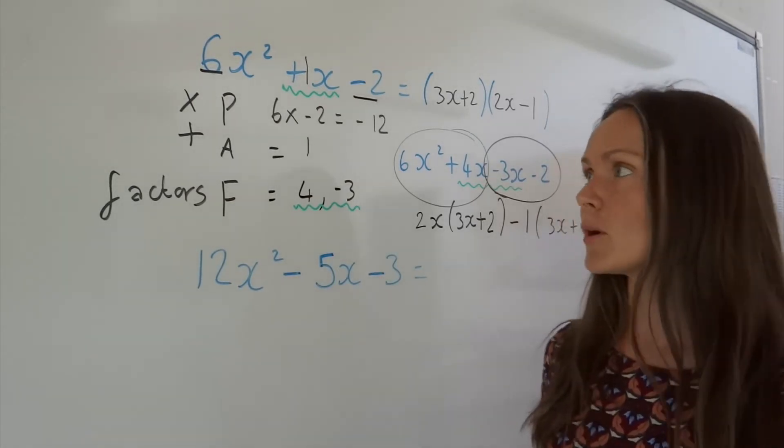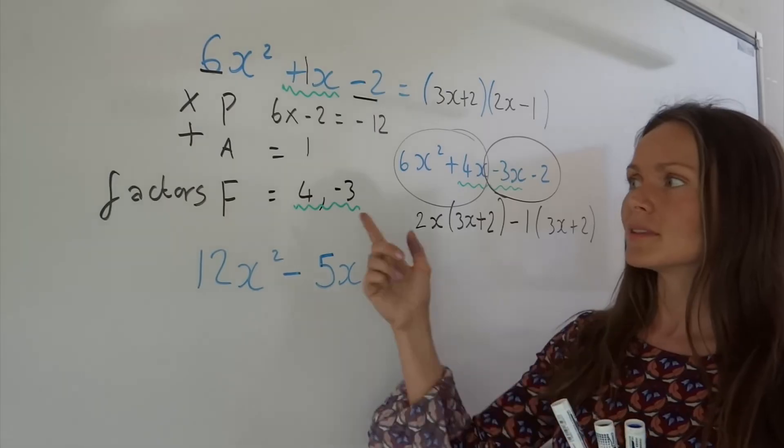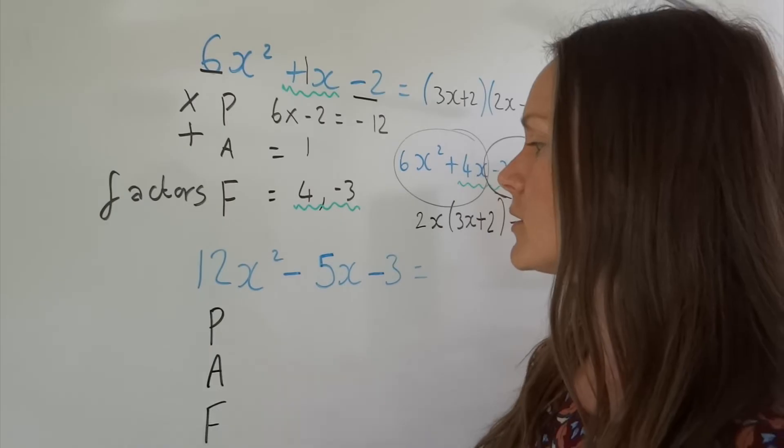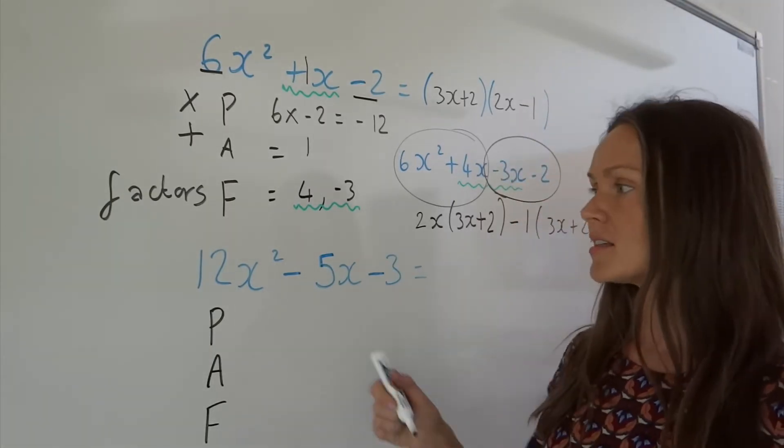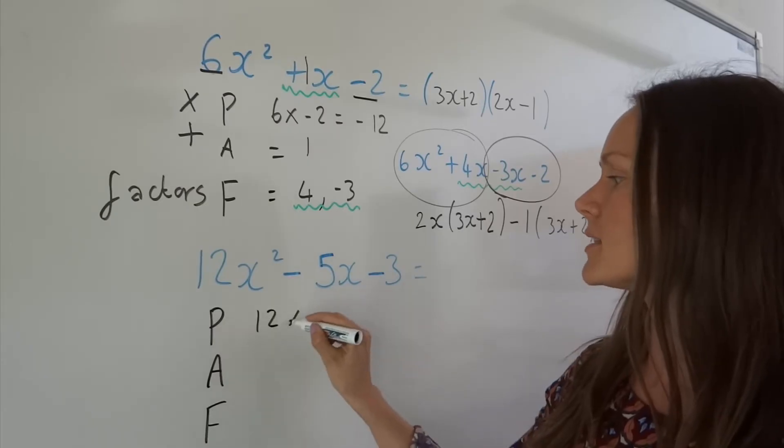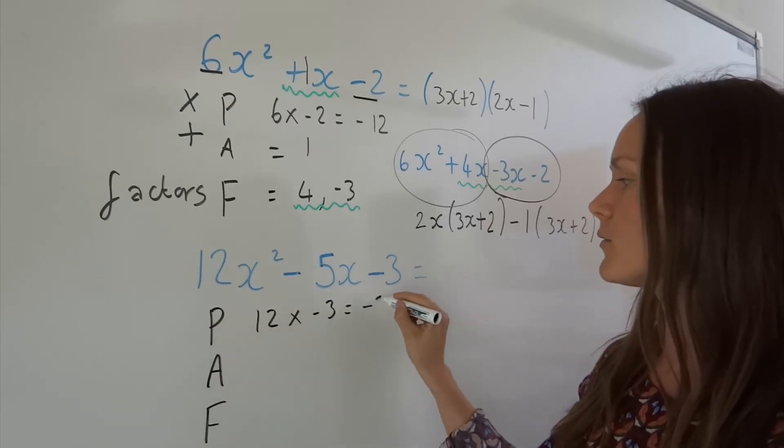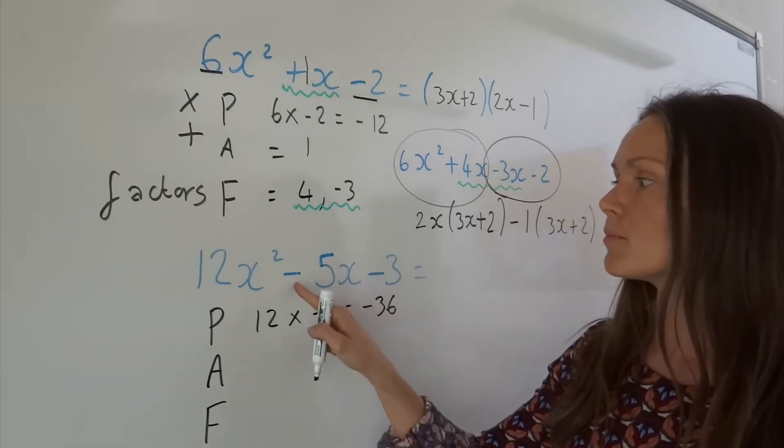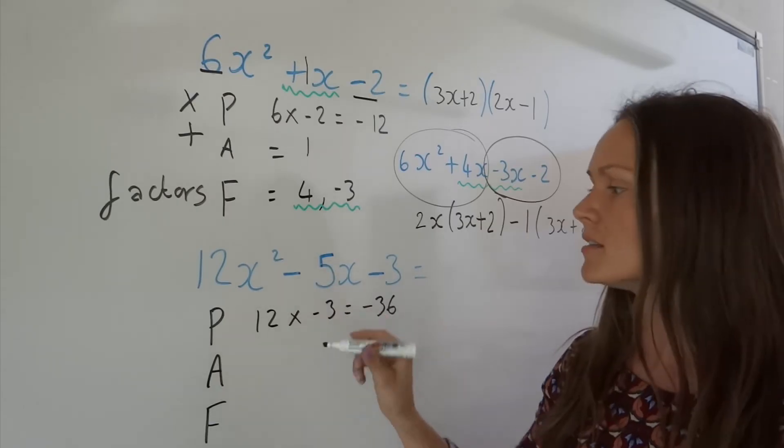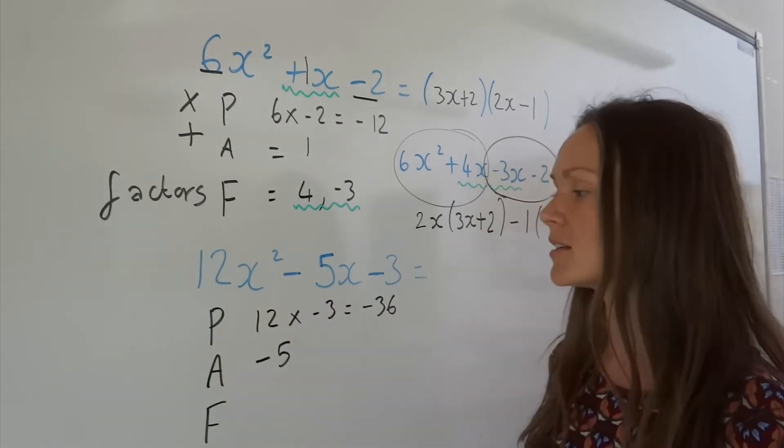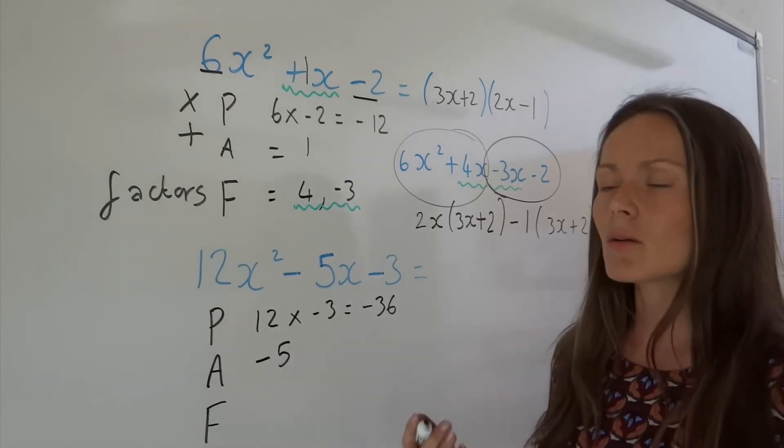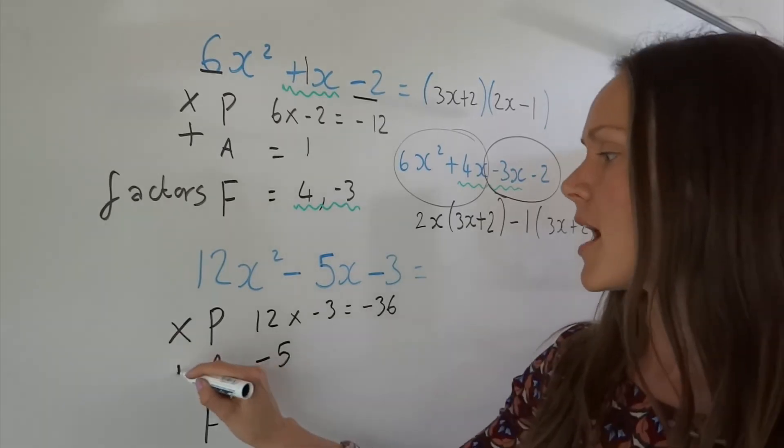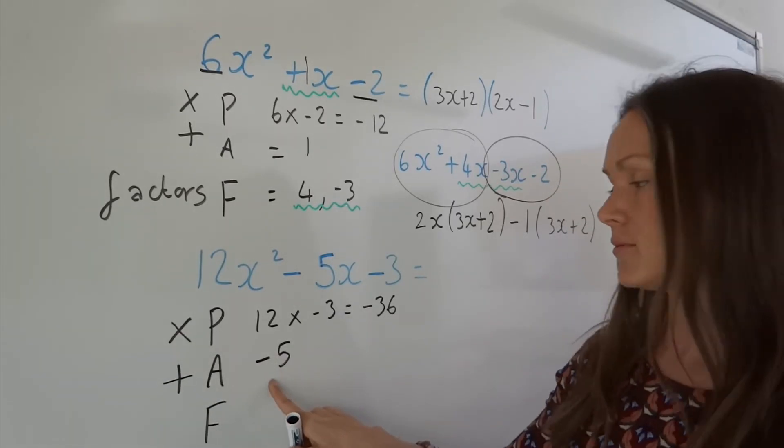I'm going to do the same thing on the next one. So remember, this is called PAF. P stands for Product, A stands for Addition, F is for Factors. So in the second one, the product is 12 multiplied by negative 3, which gives me negative 36. The addition part is the number in front of the x term. So in this case, it's minus 5. Don't forget the minus, otherwise you'll run into problems later on.